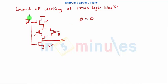So when phi is equal to 0, let's say phi bar here. Phi is equal to 0, that means phi bar is equal to 1, which means this will be turned on and output will be pre-discharged to 0. So output is 0.